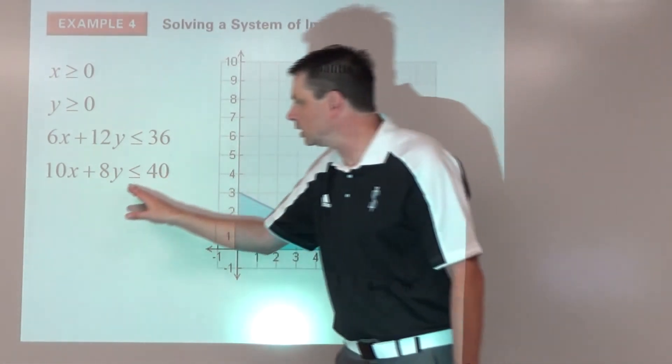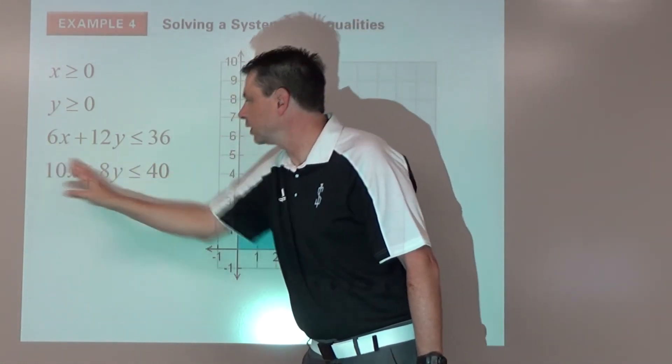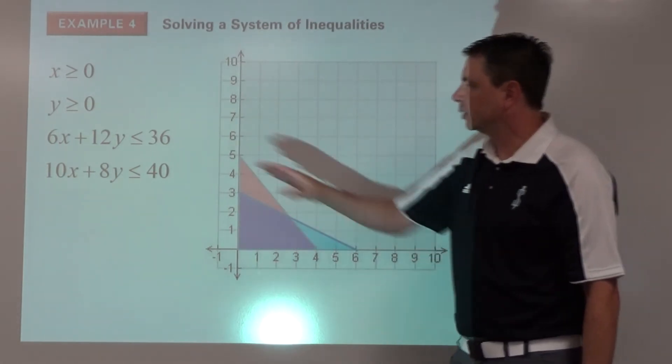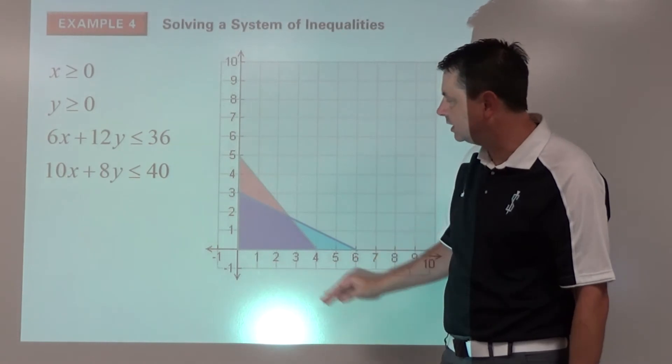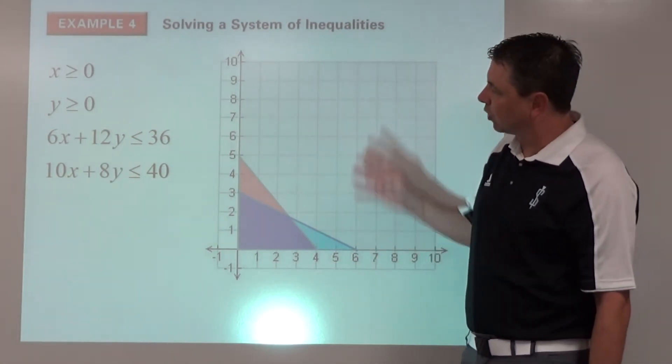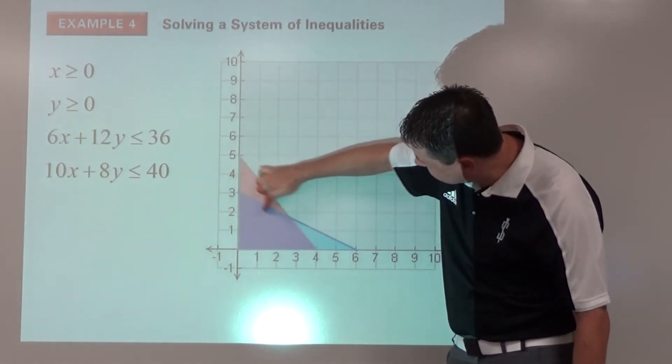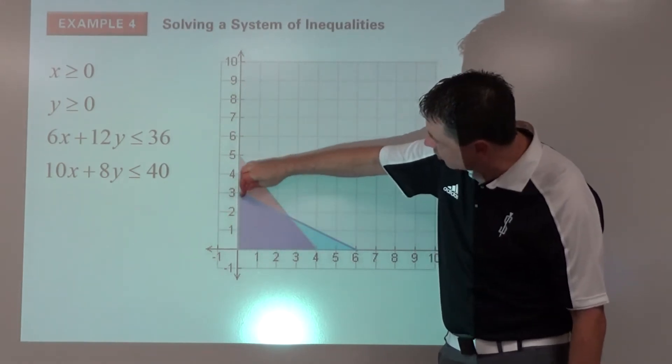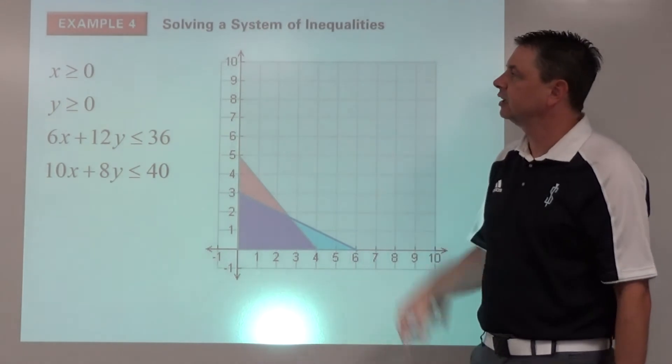And then this one, again cover up, x-intercept is 4, cover up, the y-intercept is 5. And if we plug in 0 for both, that one's also true, so we would shade inside. So the region that satisfies all four requirements is right here. Any point in here, and since these are solid lines, any one of these on the border also works. Those are all of our solutions to this system.